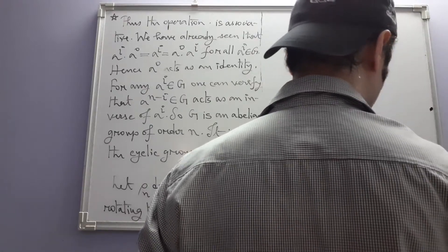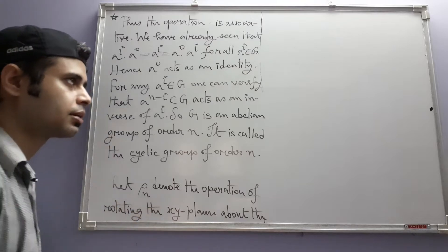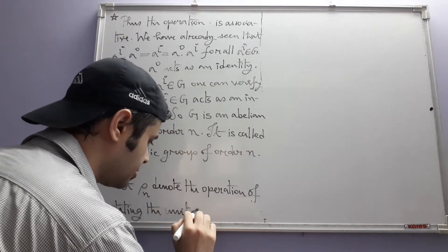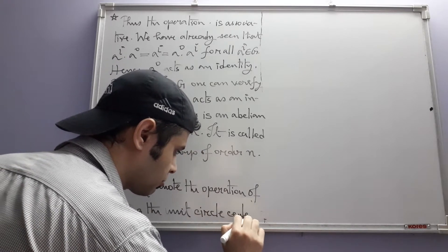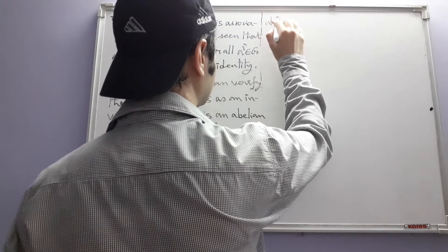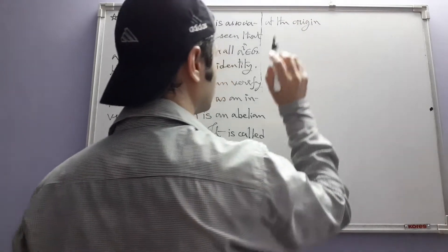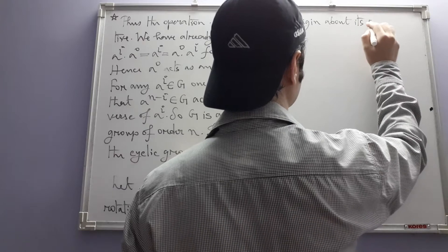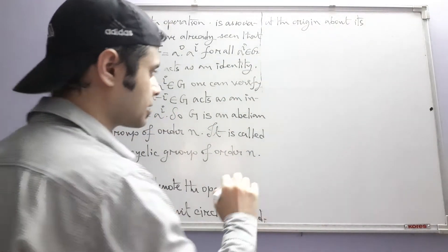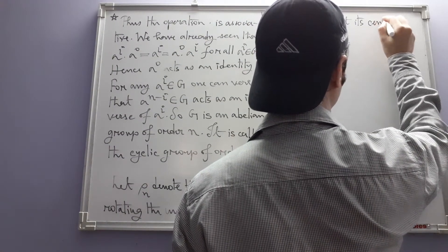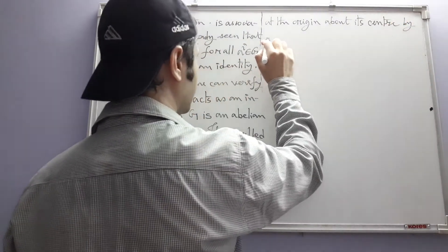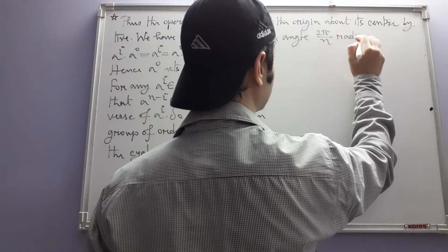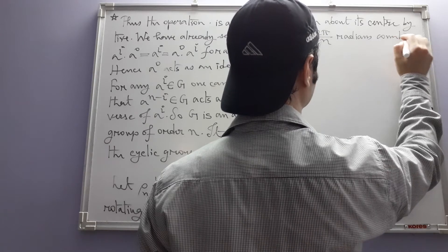Instead of considering the x-y plane, we consider the unit circle on the x-y plane — that will be better. So ρₙ denotes the operation of rotating the unit circle centered at the origin about its center by an angle of 2π/n radians counterclockwise.